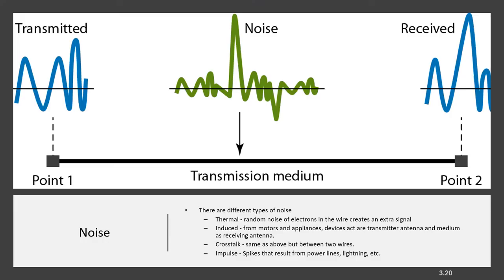Noise is another cause of impairment. Thermal noise is the random motion of electrons in a wire which creates an extra signal not originally sent by the transmitter. We have crosstalk where one wire acts as a sending antenna and the other as the receiving antenna, and there is spike, a signal with high energy in a very short time.